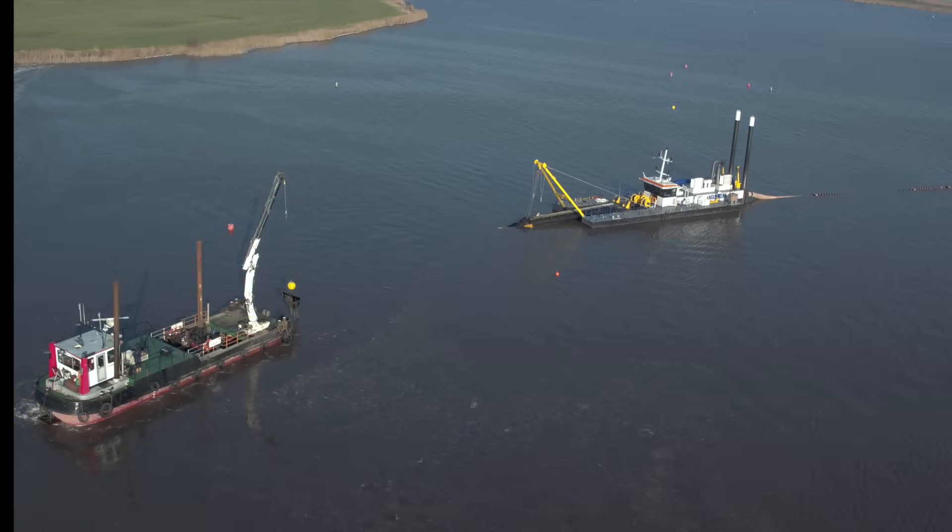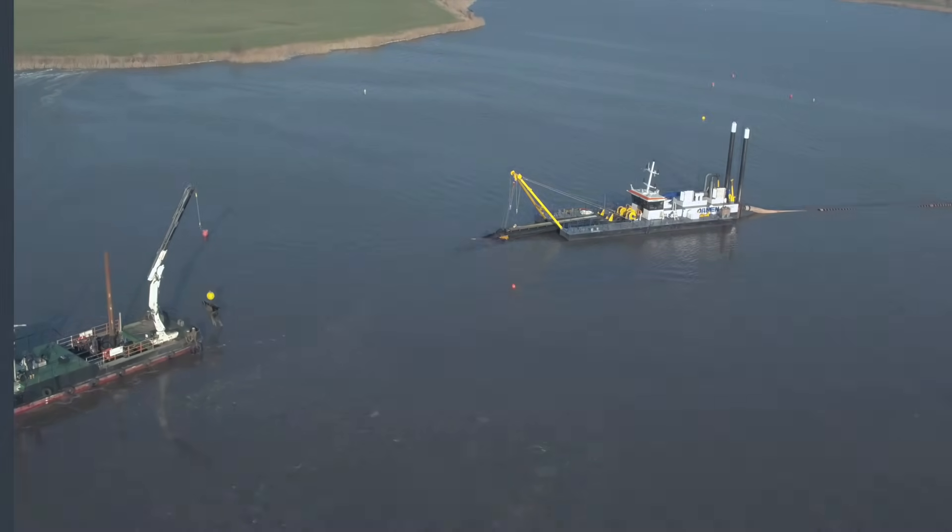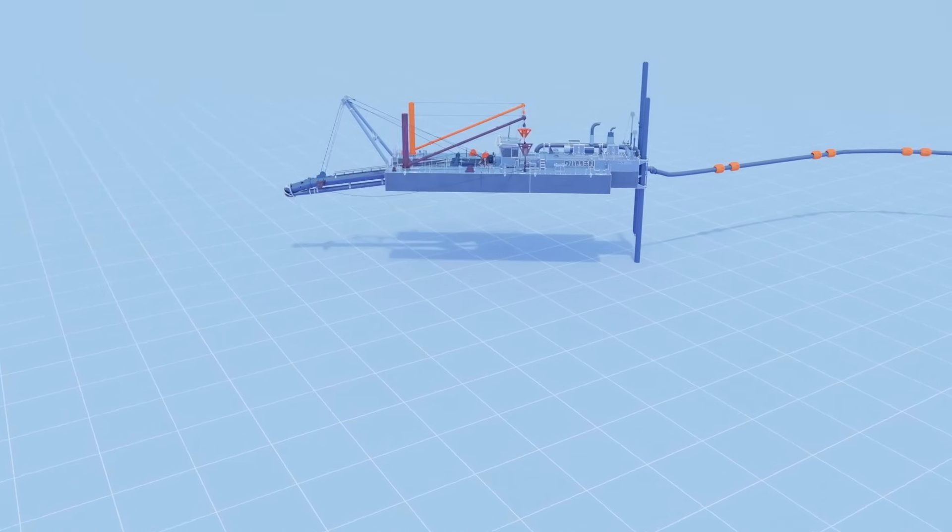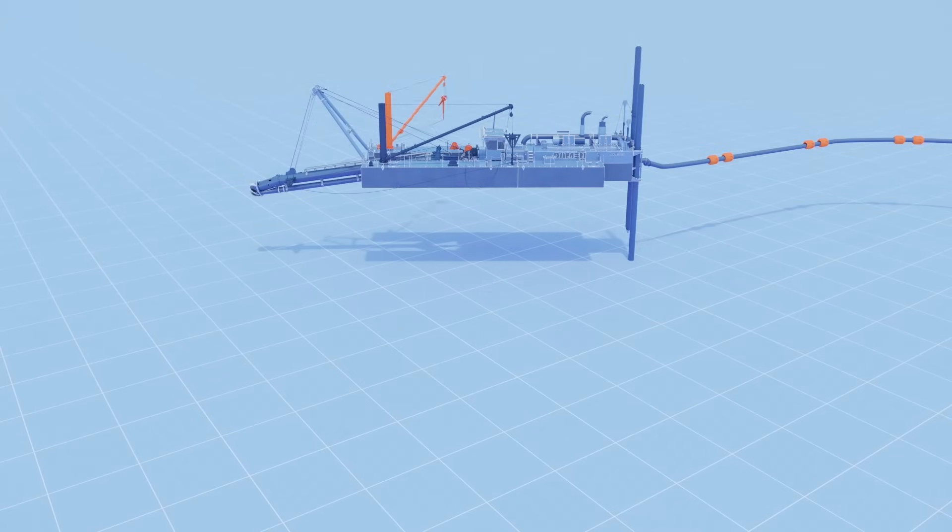A small workboat repositions the anchors. Or the dredger can be outfitted with booms, enabling the operator to reposition the anchors by itself.